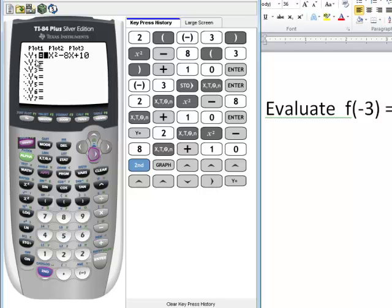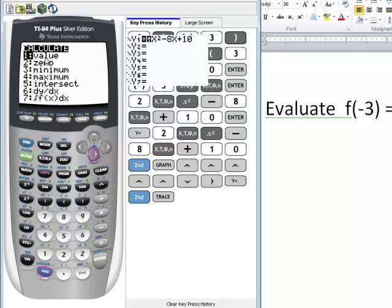The fourth and last way to evaluate, you can use the calculate option which is right above trace. Once again, since it's right above our button, we need to press second and trace in order to access it. We want the first option which is value.